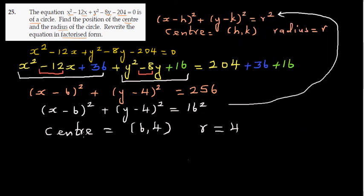So this is how you convert from the general form to the standard form and find the center and the radius. You can also draw it manually — that should not be difficult. The center is 6 comma 4 and the radius is 4.